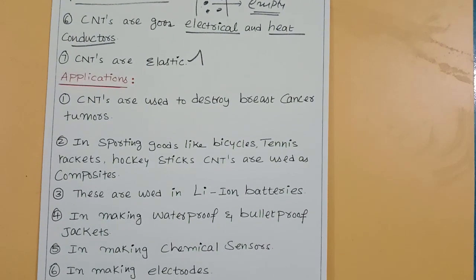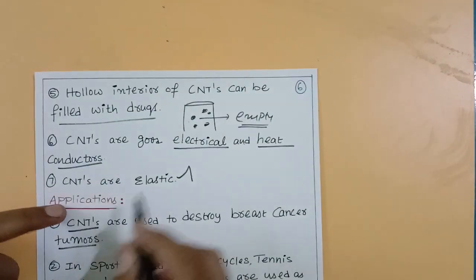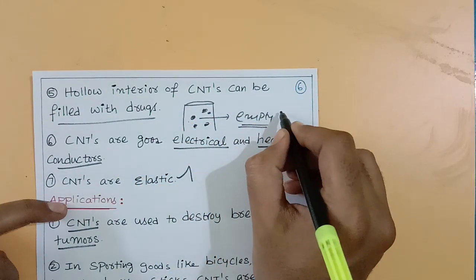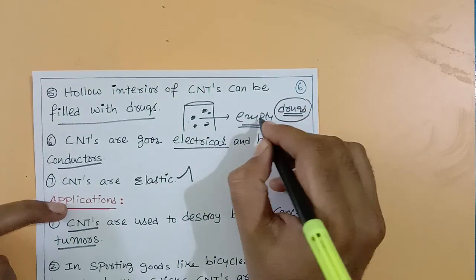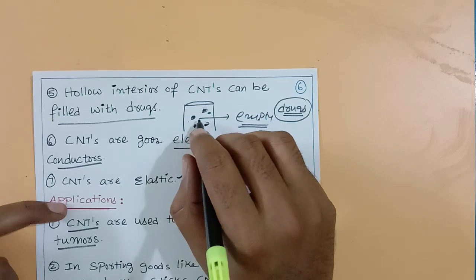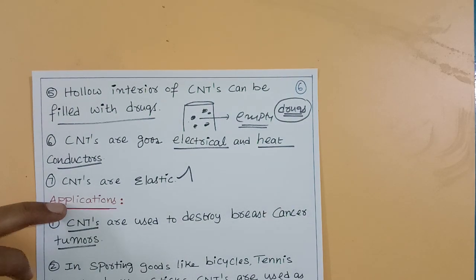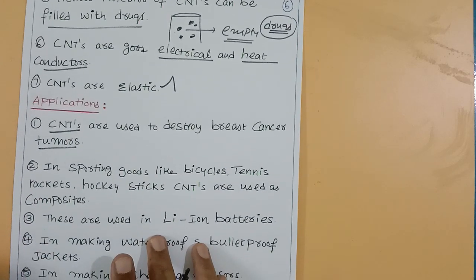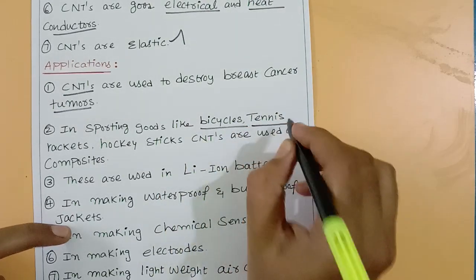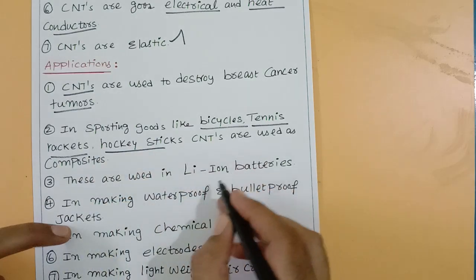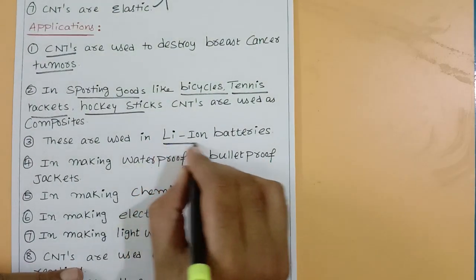Applications of carbon nanotubes: they are used to destroy breast cancer tumors by delivering anti-cancer drugs through the hollow interior. Carbon nanotubes are used in sporting goods manufacturing — bicycles, tennis rackets, hockey sticks — due to their lightweight strength. They are also used in lithium-ion batteries found in mobile phones and laptops.